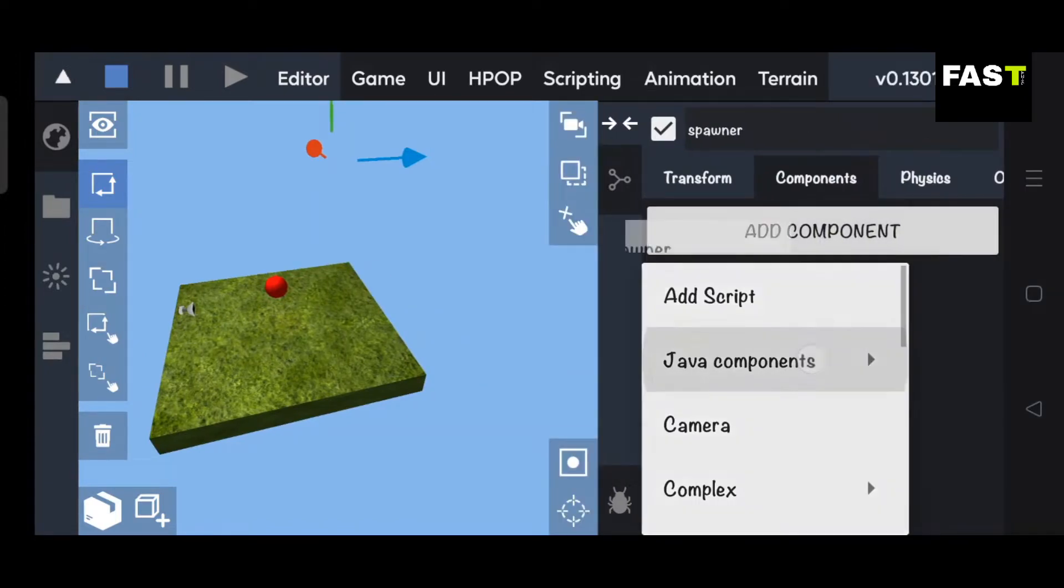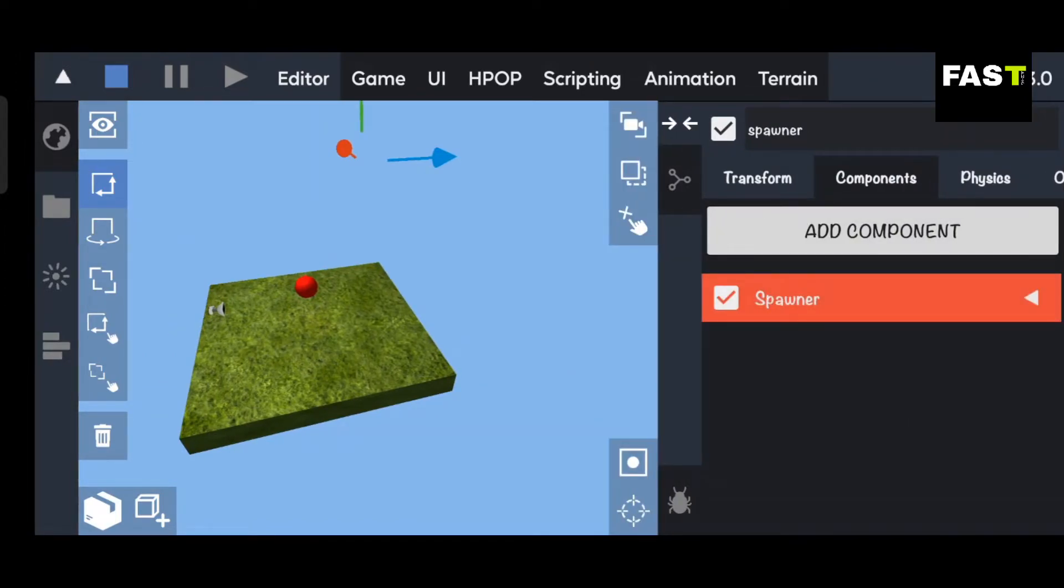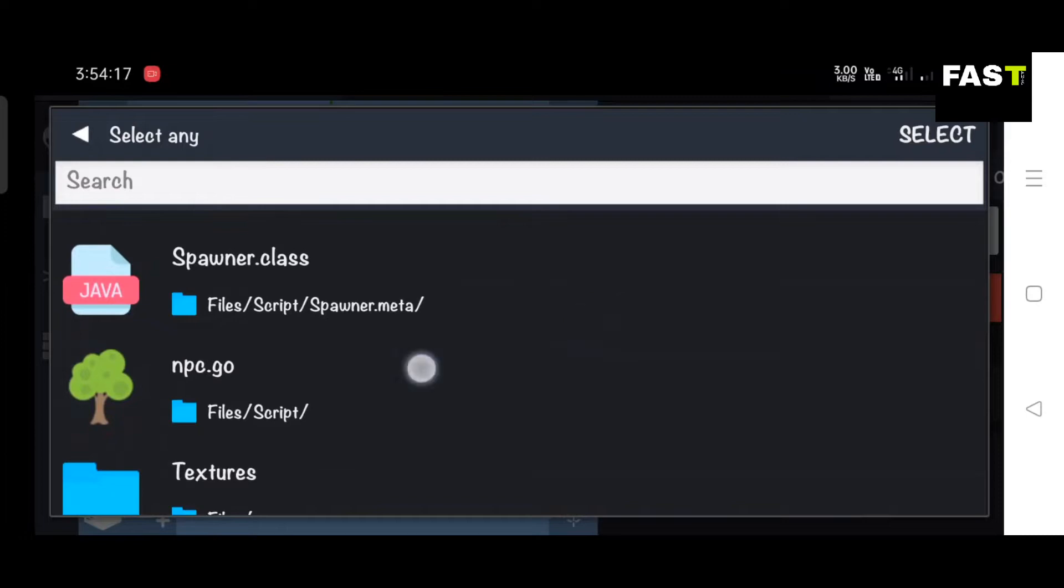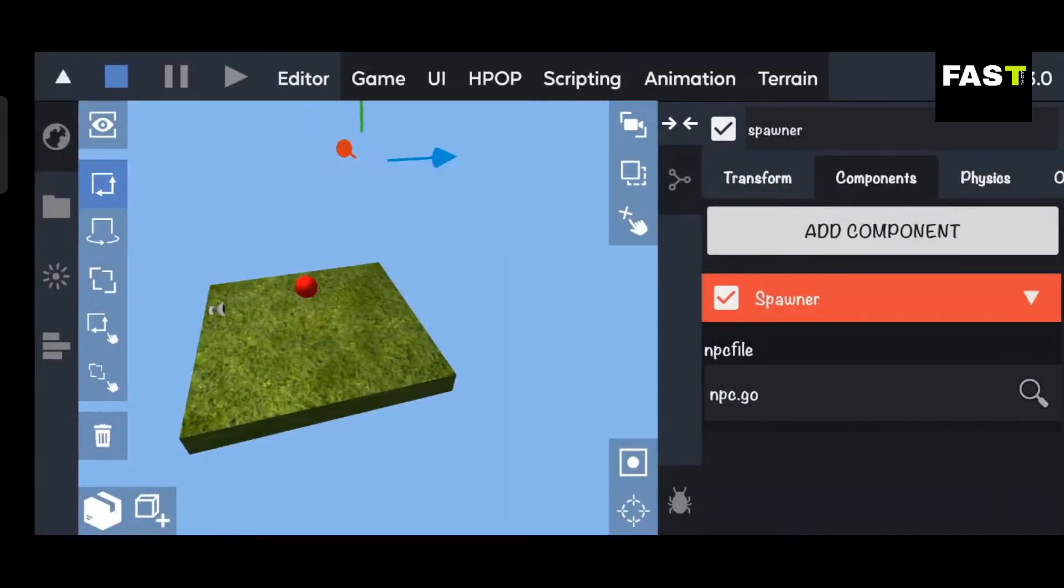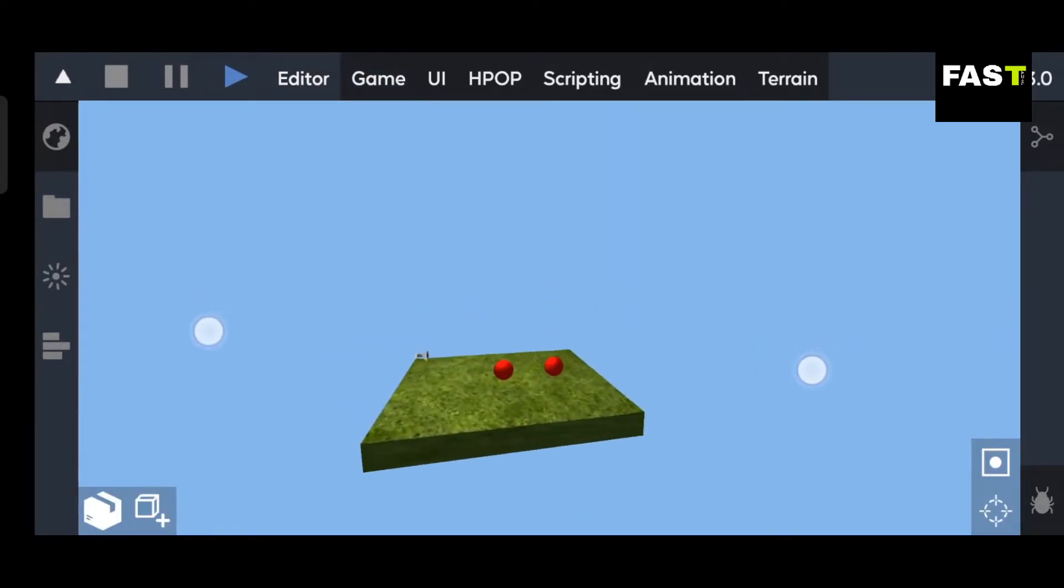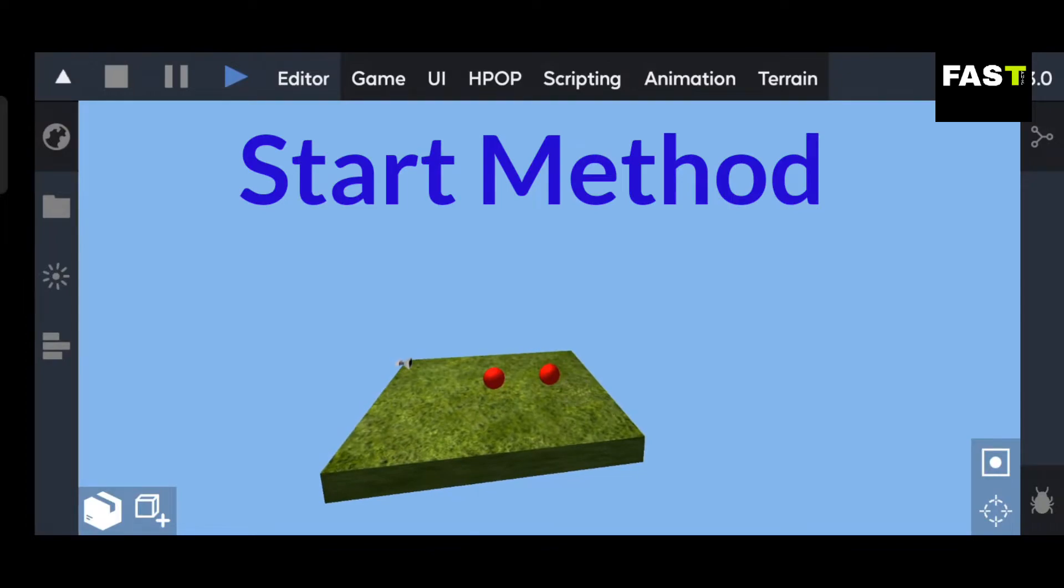Now let's add our spawner script into the empty object. Select the object file which we have saved in the folder. The object spawned only one time because we have instantiated in start method.